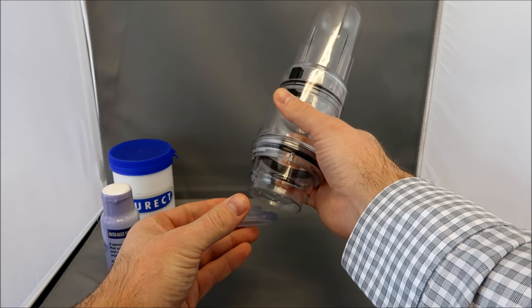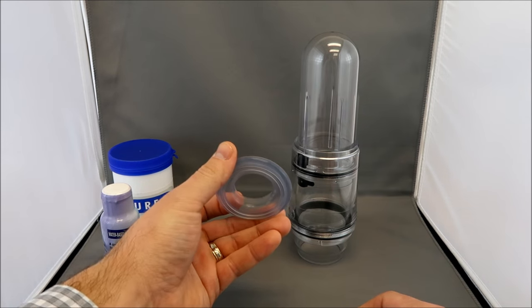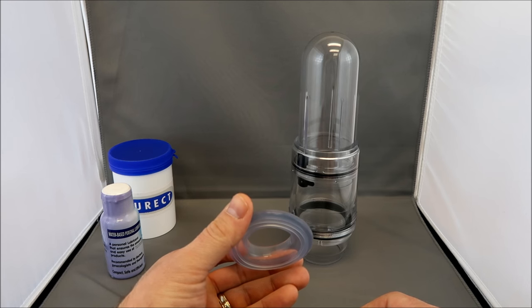Remove the cylinder, leaving the tension system at the base of the penis to maintain the erection.